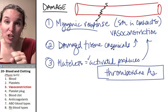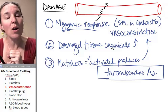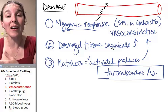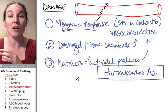If you vasoconstrict, you're going to have less blood flow through that vessel. And if you have less blood flow, you will have less blood loss. This is all fast. This is all immediate.